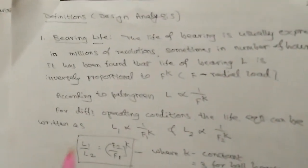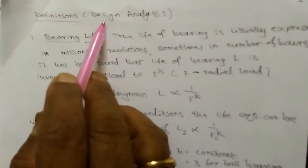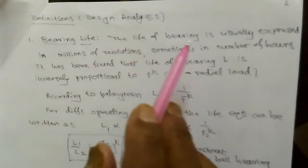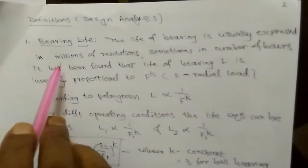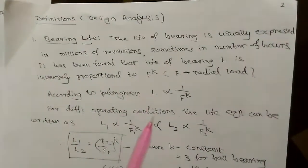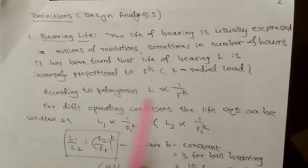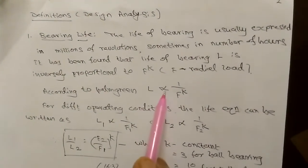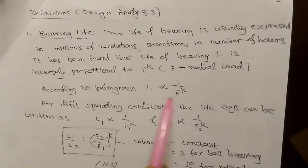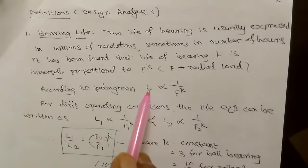For antifriction bearings, the design is based on equations governed by the following definitions. First, bearing life is defined as expressed in terms of millions of revolutions or in terms of number of hours. According to Palmgren, life L is inversely proportional to the radial load raised to power K, where F is the radial load. For different operating conditions, if load is F1 with life L1, and load F2 with life L2, then L1/L2 = (F2/F1)^K.